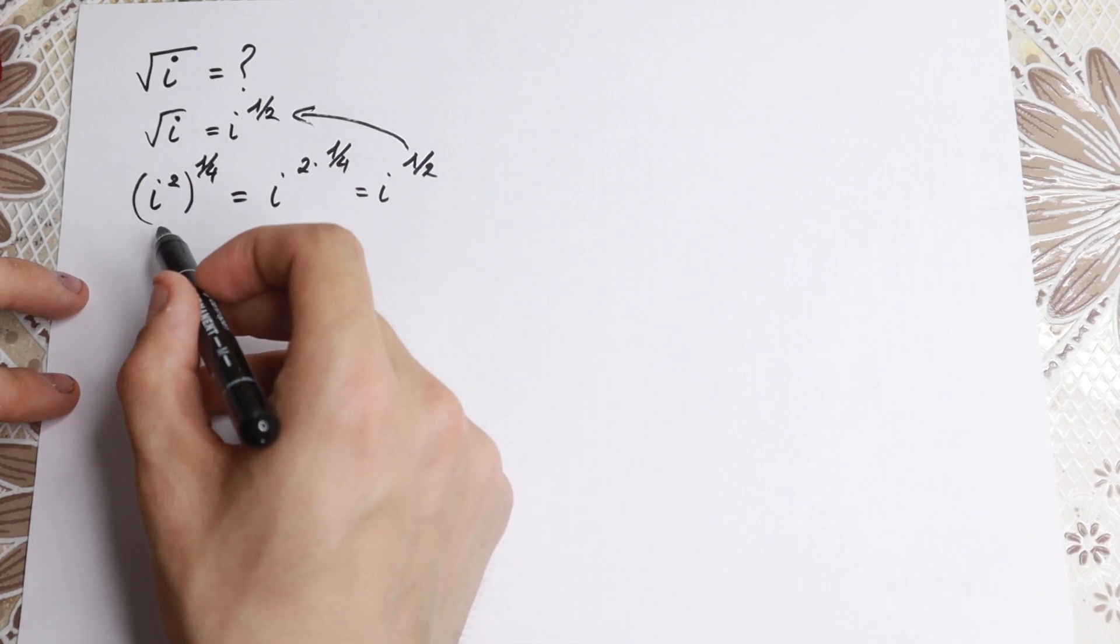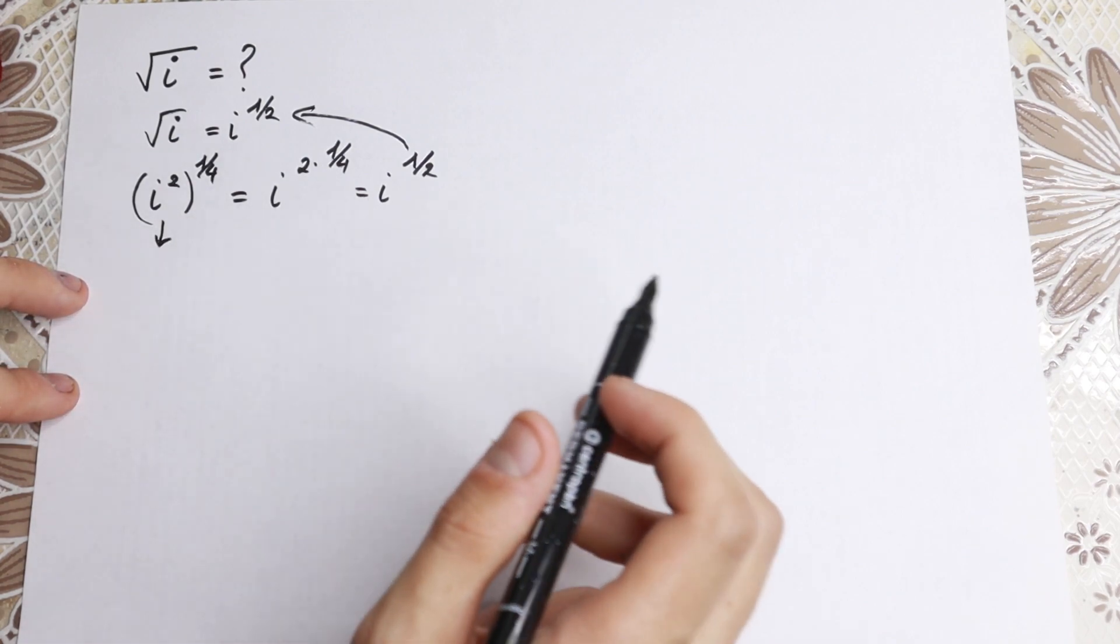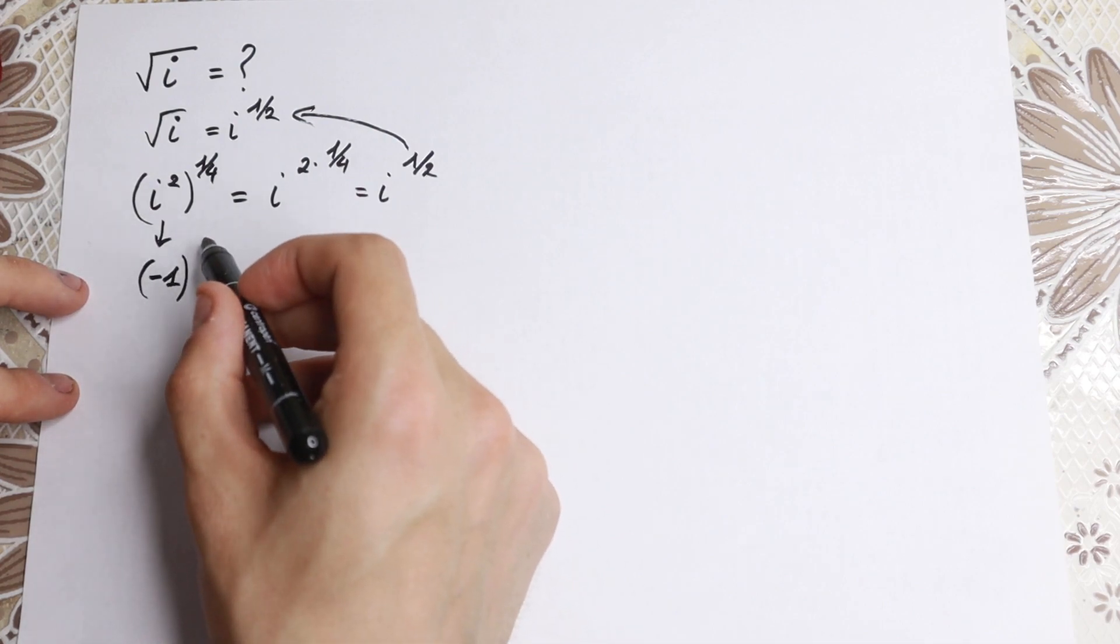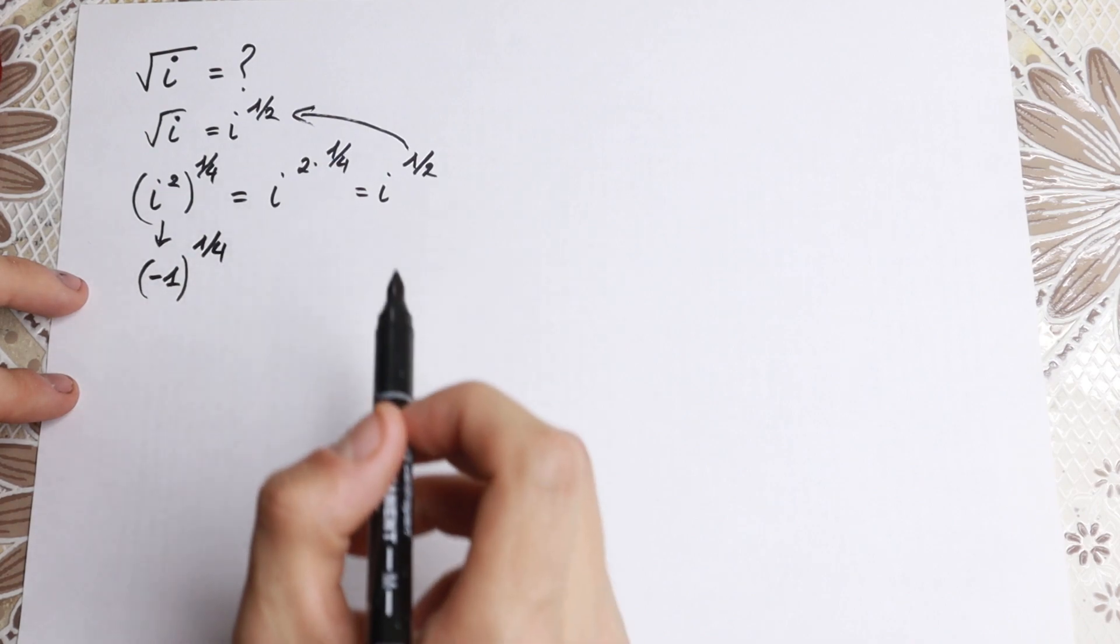But we all know that i squared equals minus one. So we can easily write it as minus one to the power of one-fourth.